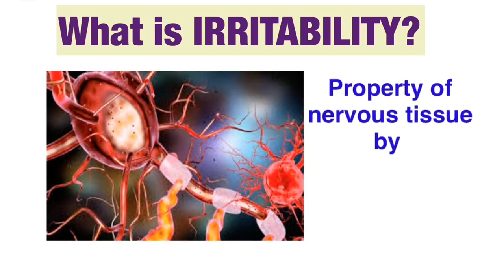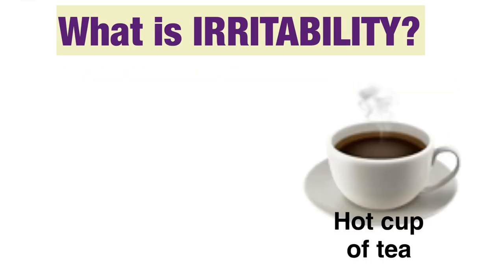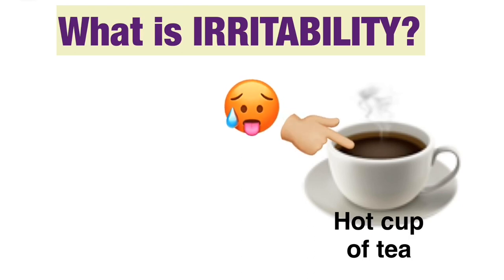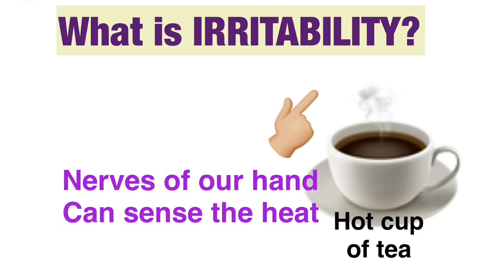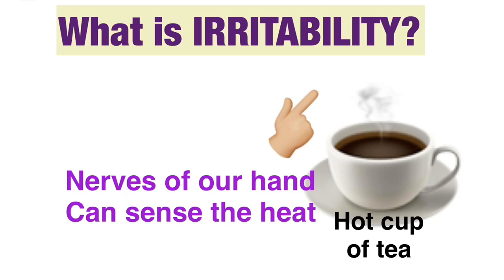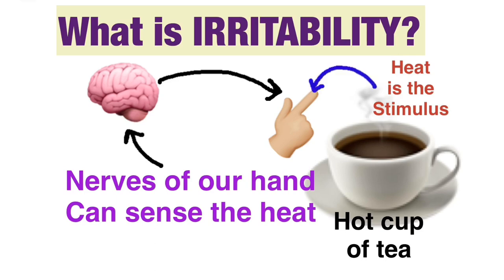Irritability is the property by virtue of which nervous tissue responds to any external stimulus. For example, when we touch a hot object, we immediately remove our hand. This is because the irritability of the nerves of our hands can sense the heat of the object, and the brain sends the message to remove the hand. The heat of the hot object is the external stimulus which irritates the nerves, and the nerves in turn help us remove our hand.